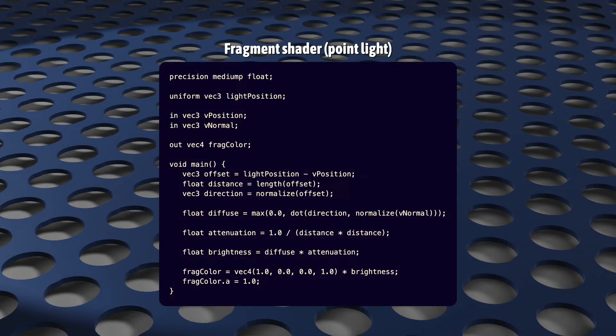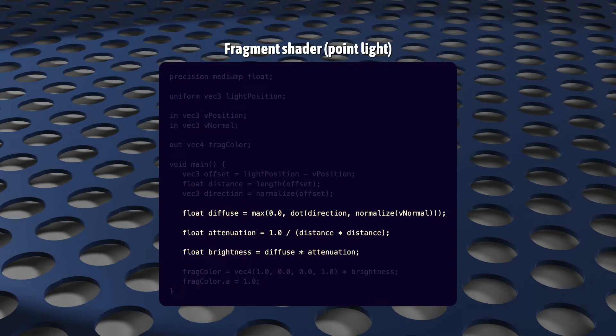Here's what our point light code will look like. This is basically the same as with directional diffuse lighting, except now we have an attenuation factor, which reduces the brightness of a surface as the light gets farther away.